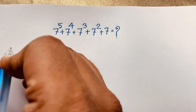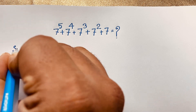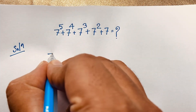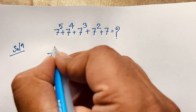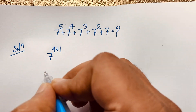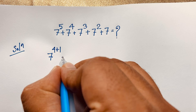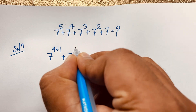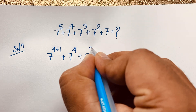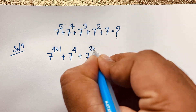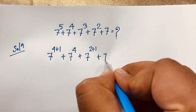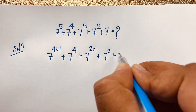Our solution. Our question will be 7 to the power 5. I solve this question step by step. Then here 7 to the power 4 plus 7 to the power 3, it will be 7 to the power 2 plus 1. We know that 2 plus 1 it will be 3. Then here 7 to the power 2 plus 7.